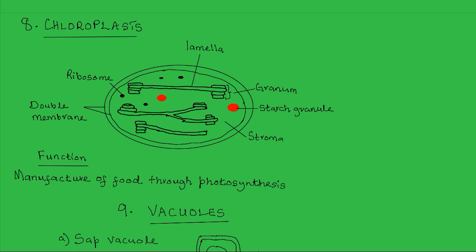Each chloroplast is surrounded by two membranes, so that gives it a double membrane. And like many of the other organelles, the chloroplast has a double membrane.